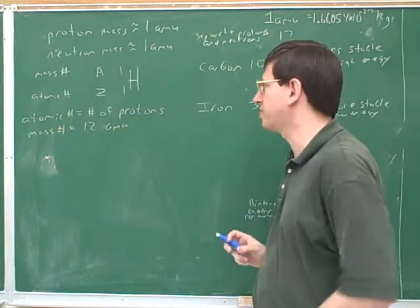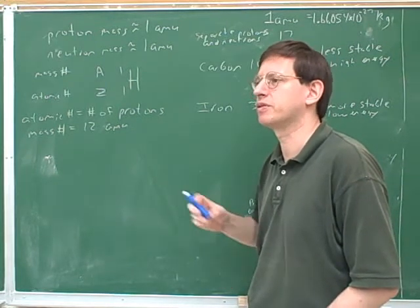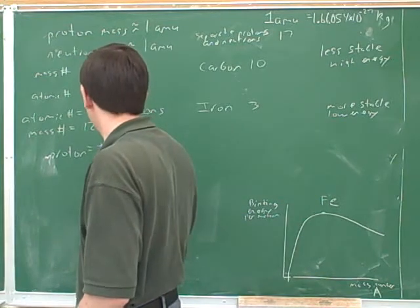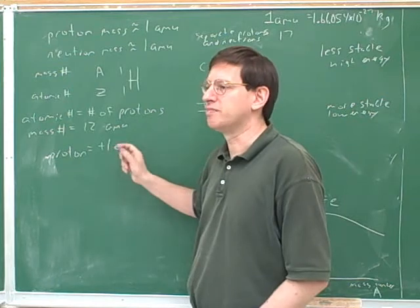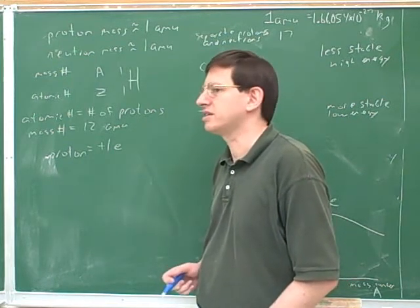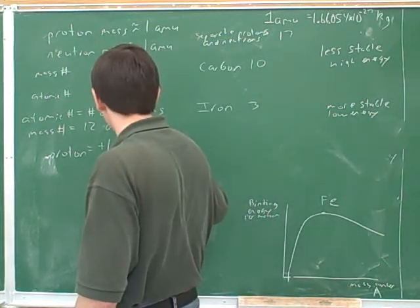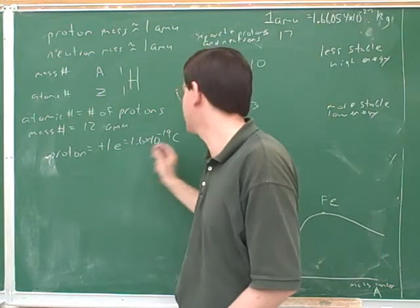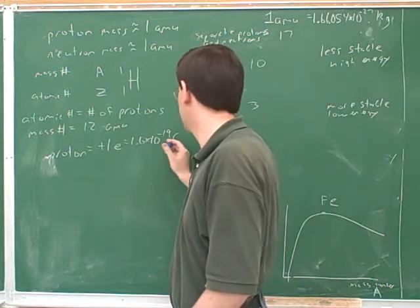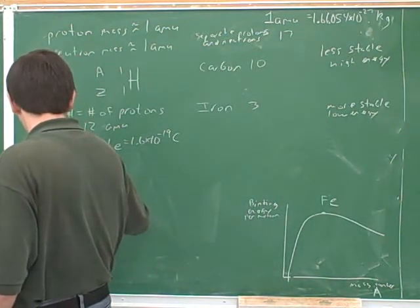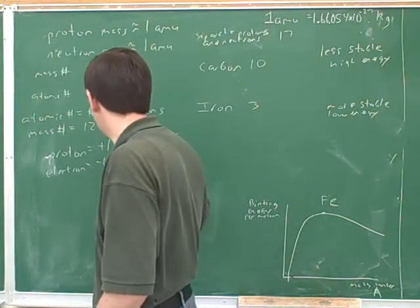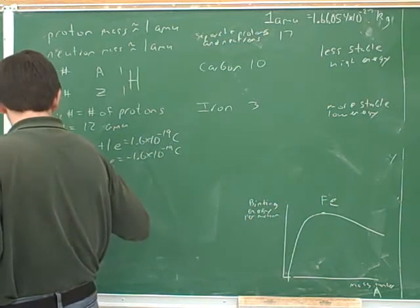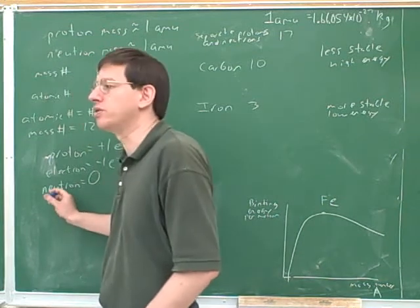We should briefly talk about charge. What is the charge on a proton? The charge on a proton is positive 1e — e is the elementary charge unit for a proton. It's also 1.6 times 10 to the negative 19 coulombs. Just like it's easier to use AMUs instead of kilograms, it's easier to use elementary charge units instead of coulombs. The charge on an electron is minus 1e, or minus 1.6 times 10 to the negative 19 coulombs. And the charge on a neutron is zero — that's why it's called neutron: neutral.